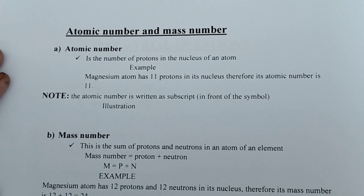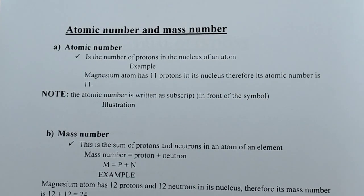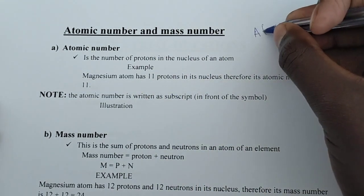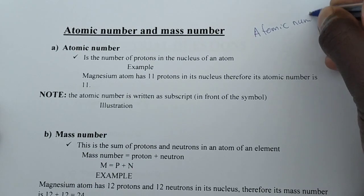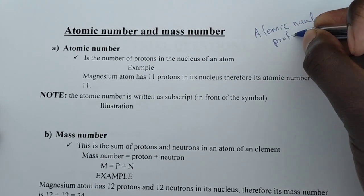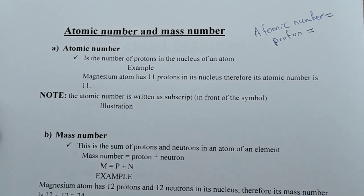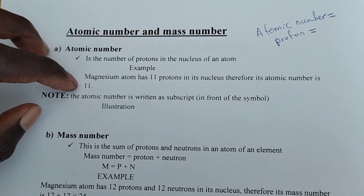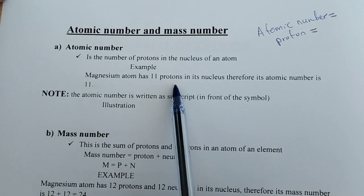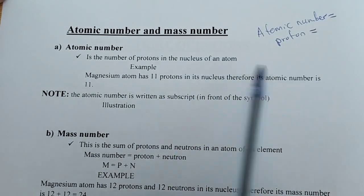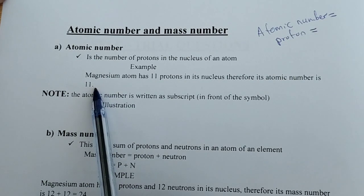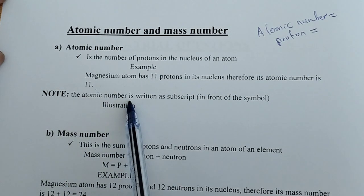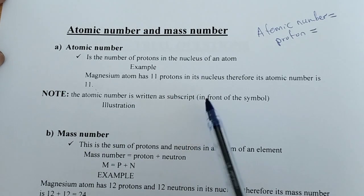Next, we have atomic number and mass number. The atomic number is the number of protons in the nucleus of an atom. If you know the number of protons, you know the atomic number — they are the same. For example, a magnesium atom has 12 protons in its nucleus, therefore its atomic number is 12.